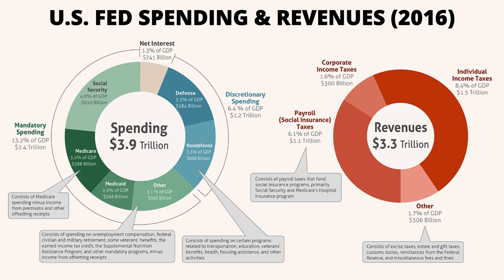Notice that the majority of revenues come from individual income taxes and from payroll taxes. Payroll taxes are deducted directly from employees' earnings. If you receive paychecks from an employer, you'll see several line items on each paycheck with deductions for federal income tax, Social Security, and Medicare. It is these taxes, paid by working US citizens, that account for the overwhelming majority of tax revenues.